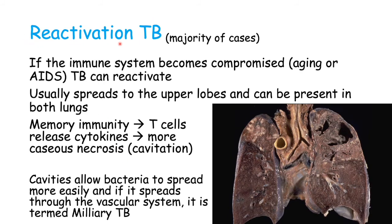The trouble is when TB reactivates — reactivation TB — which accounts for the majority of cases of active disease. If the immune system becomes compromised, such as in aging or in AIDS — TB has a very high correlation with AIDS — it can reactivate. As we saw before, it is a cell-mediated immune response, and in AIDS we have very few CD4 white blood cells. When it reactivates, it will usually spread to the upper lobes and can be present in both lungs. Since we've dealt with it before, there will be some memory immunity, and T cells will release a lot of cytokines to try and contain the infection again.